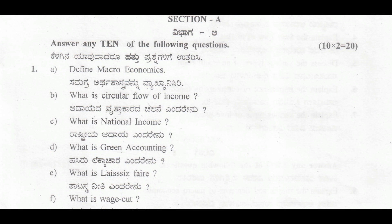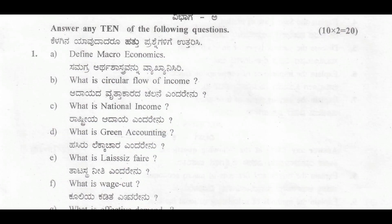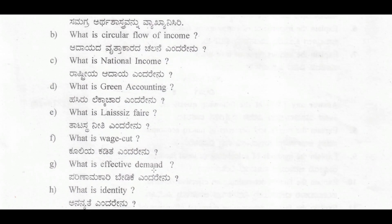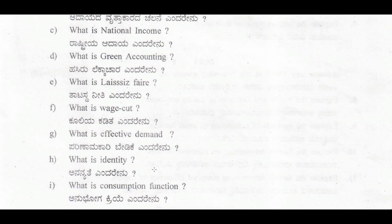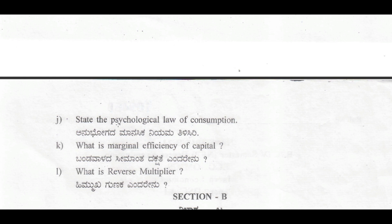The Section A questions include: define microeconomics, what is circular flow of income, what is national income, what is green accounting, what is laissez-faire, what is wage cut, what is effective demand, what is identity, what is consumption function, state the psychological law of consumption, what is marginal efficiency of capital, and what is reverse multiplier.